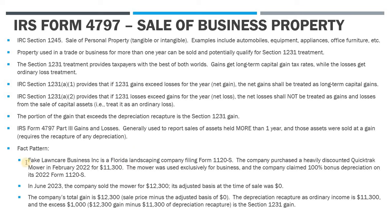Looking at the fact pattern, we've got this fake lawn care business — a Florida landscaping company. The company purchased a QuickTrack mower in February 2022 for $11,300. For purposes of this example we're assuming this was a heavily discounted sale price. They used that mower exclusively for business purposes, and the company claimed 100% bonus depreciation in 2022, depreciating the entire cost of that mower. Its adjusted basis is now zero. Then in June 2023, the company sold that mower for $12,300 — a thousand dollars more than they actually bought it.